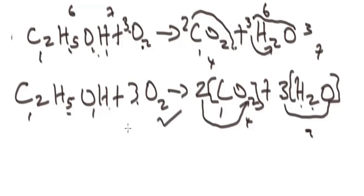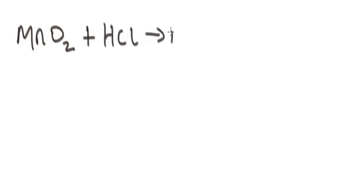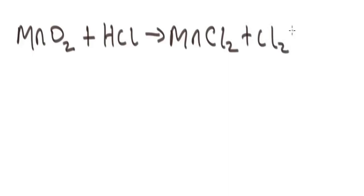Let's have one more example and then we can call it a class. We are given this problem: manganese dioxide MnO₂ plus hydrochloric acid HCl yields manganese chloride MnCl₂, plus chlorine gas Cl₂, plus water H₂O. So how do we balance this equation?